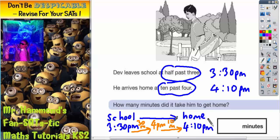So you've actually got 30 minutes plus an extra 10 minutes, which makes 40 minutes. And that is the final answer. So it takes Dev 40 minutes to arrive home.